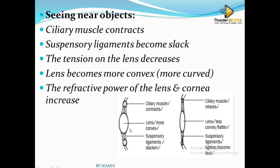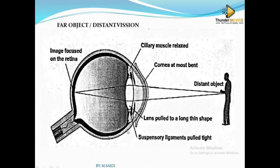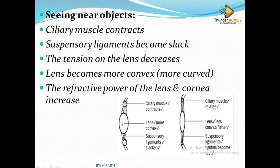Once the refracting power increases, the lens can bend the light more onto the retina, and then the light will be focused on the retina. You will be able to see the object, meaning the image has been formed onto the retina.